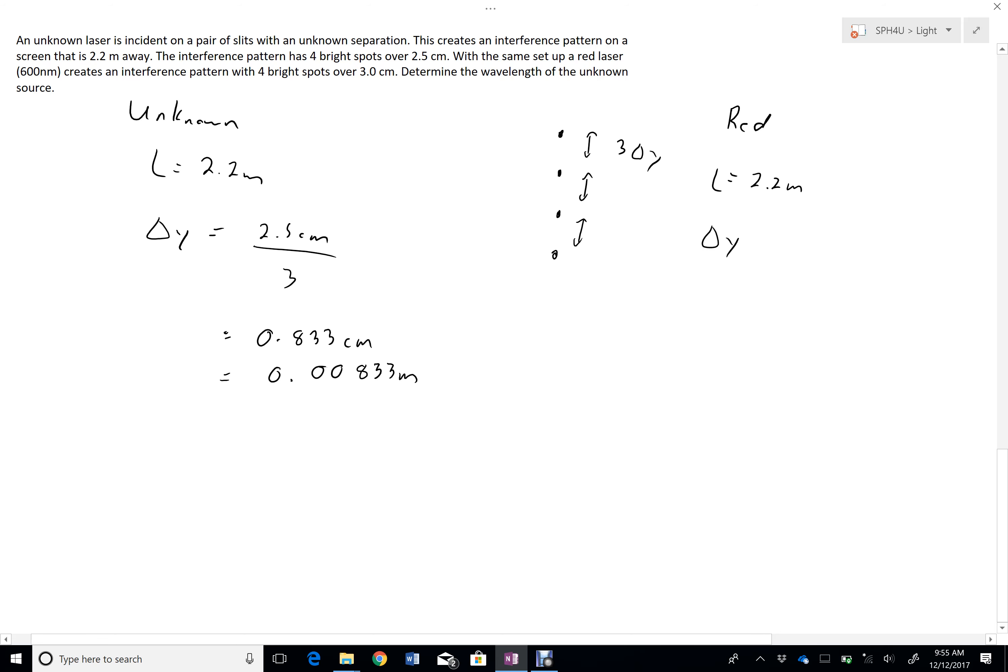And here I'm going to get delta Y equals 3 centimeters. 3 bright spots, or 3 separations, 4 bright spots. So that's 1 centimeter, or 0.01 meters. And it says it's a red laser with a wavelength of 600 nanometers.